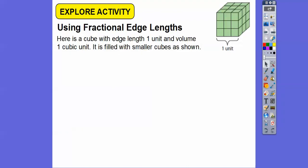Here's a cube that has edge length 1 and volume 1 cubic unit. It's filled with smaller cubes as shown. So how many small cubes are there to fill the large cube? So here's 1, and it says right here the volume is 1 cubic unit. The reason why it's 1 is because it's 1 times 1 times 1.